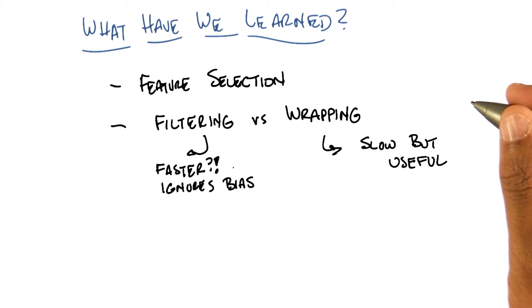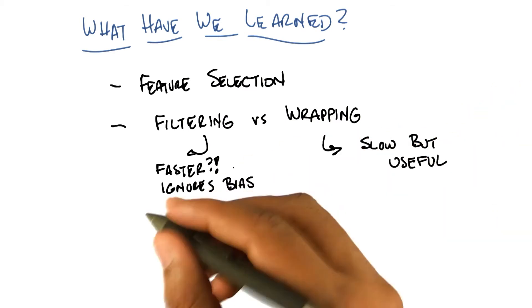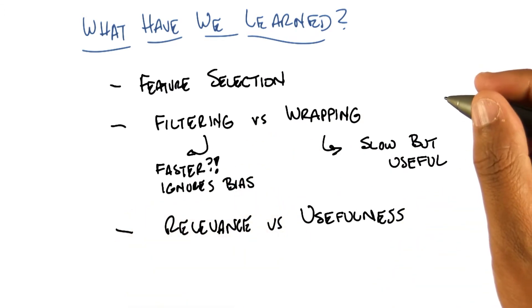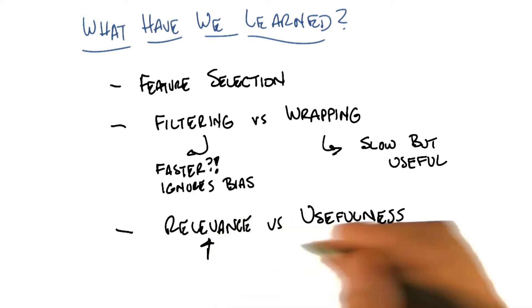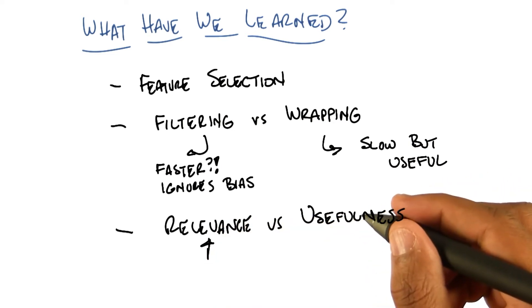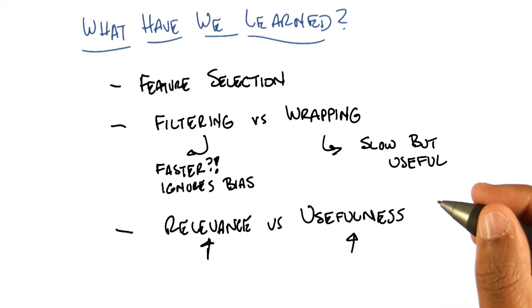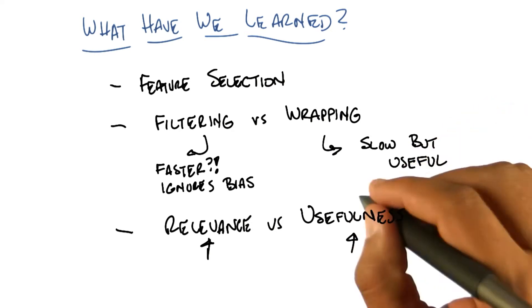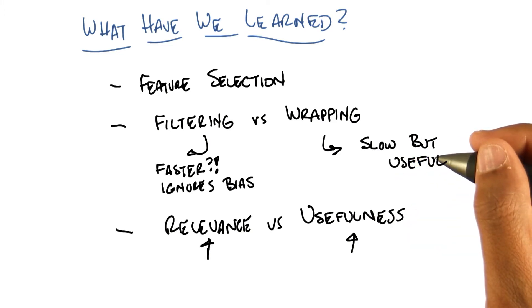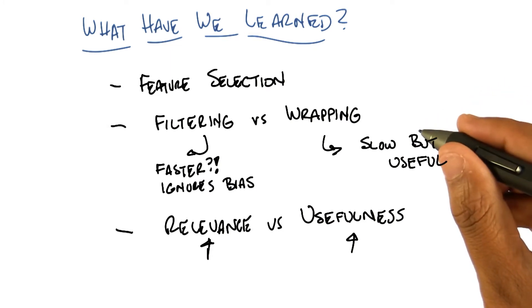Well, so we specifically learned about the distinction between features being useful versus them being relevant. That's right. So relevant things are things that give you information about the classification problem or the regression problem that you care about. But useful features are things that help you to actually do the learning, given some specific algorithm. Right, and you reminded me what a Bayes optimal classifier was. Which I guess I should have known already, but somehow I didn't understand how it fit into this context.